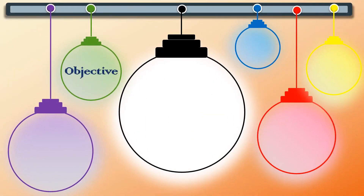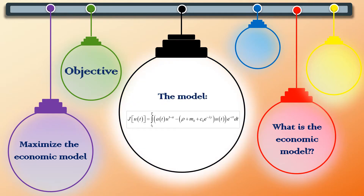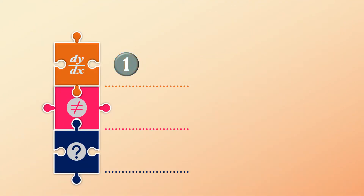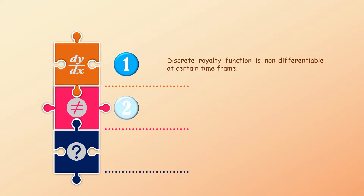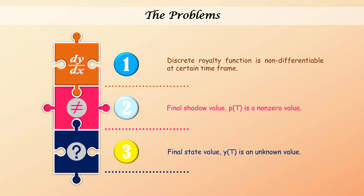The main objective is to maximize the economic model which is the performance index. However, three main problems arose when solving the economic model: the royalty function is non-differentiable at certain time frames, the final shadow value is not equal to zero, and the final state value is said to be free and unknown.